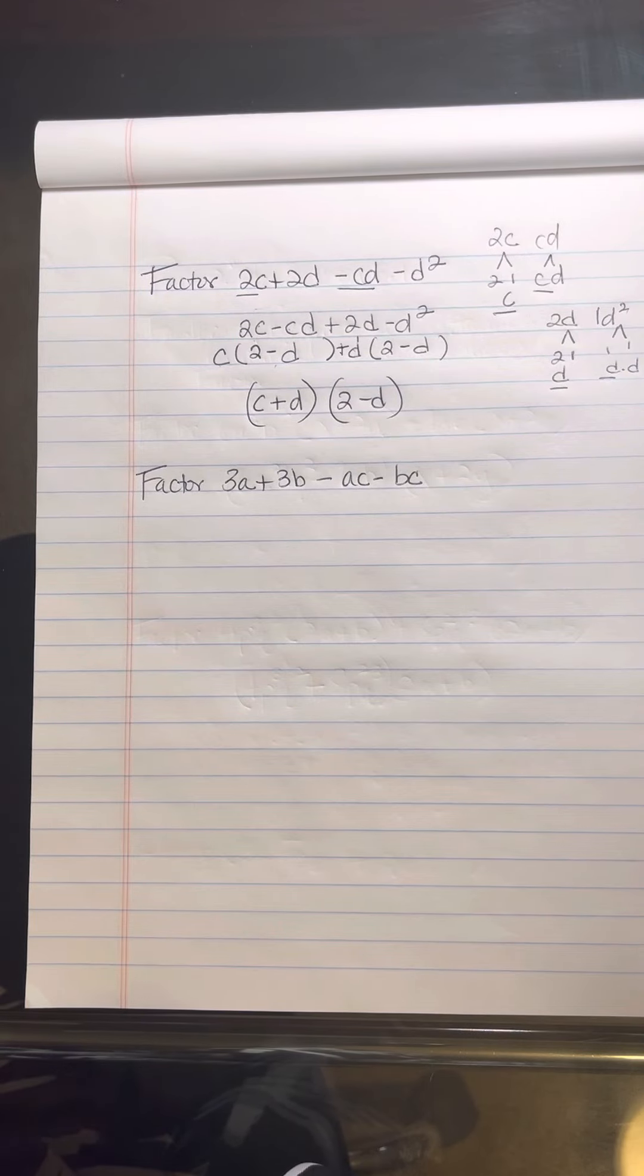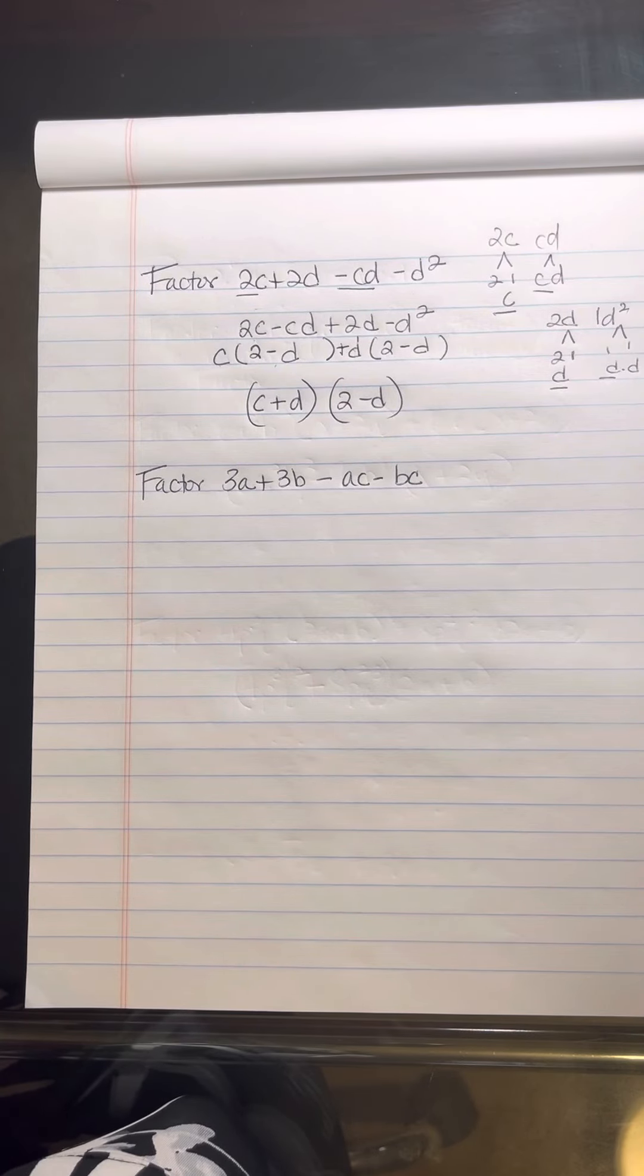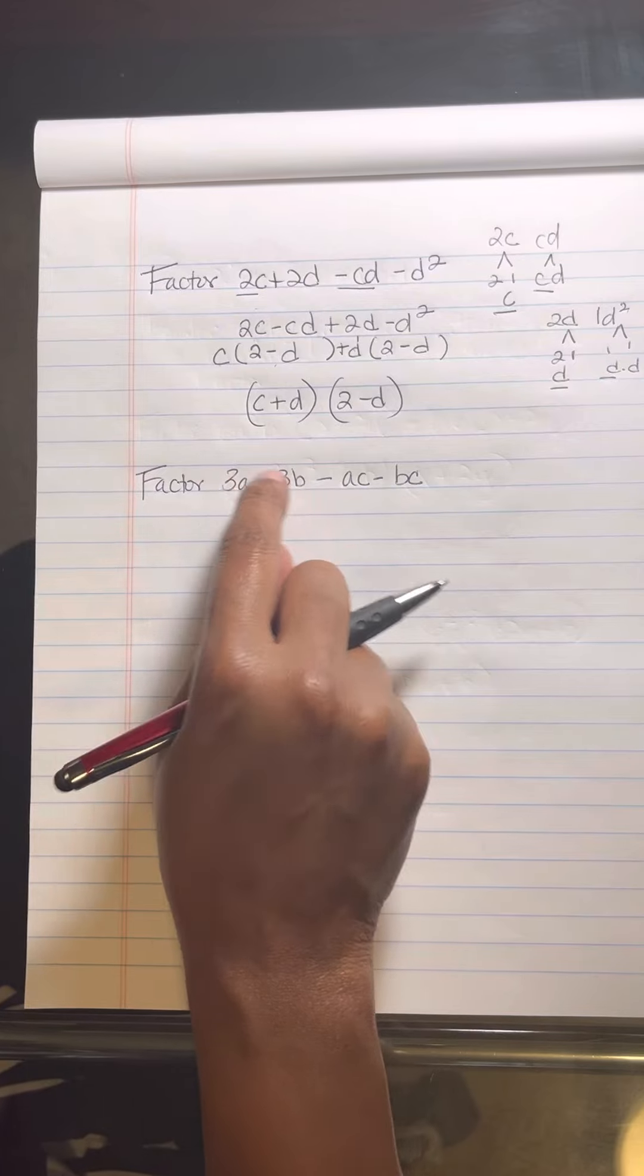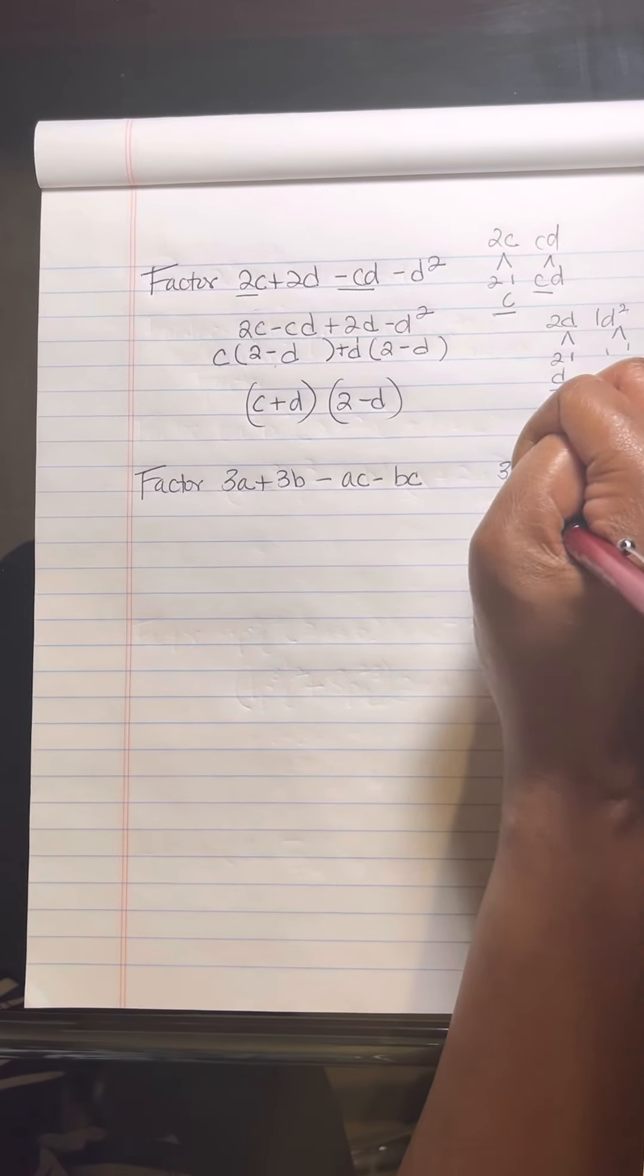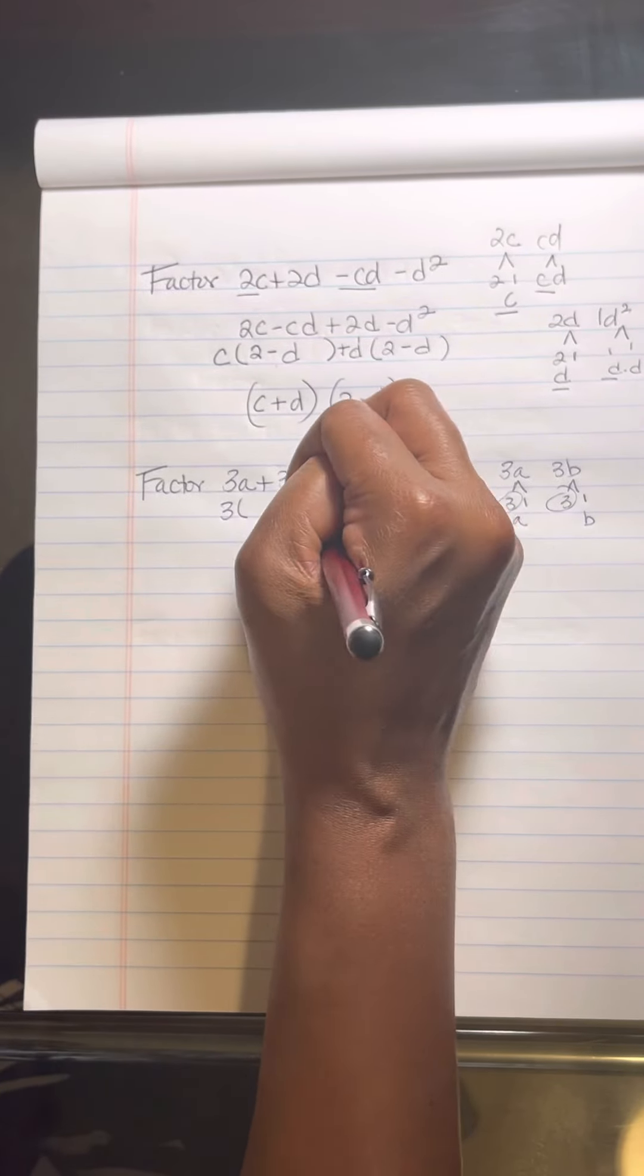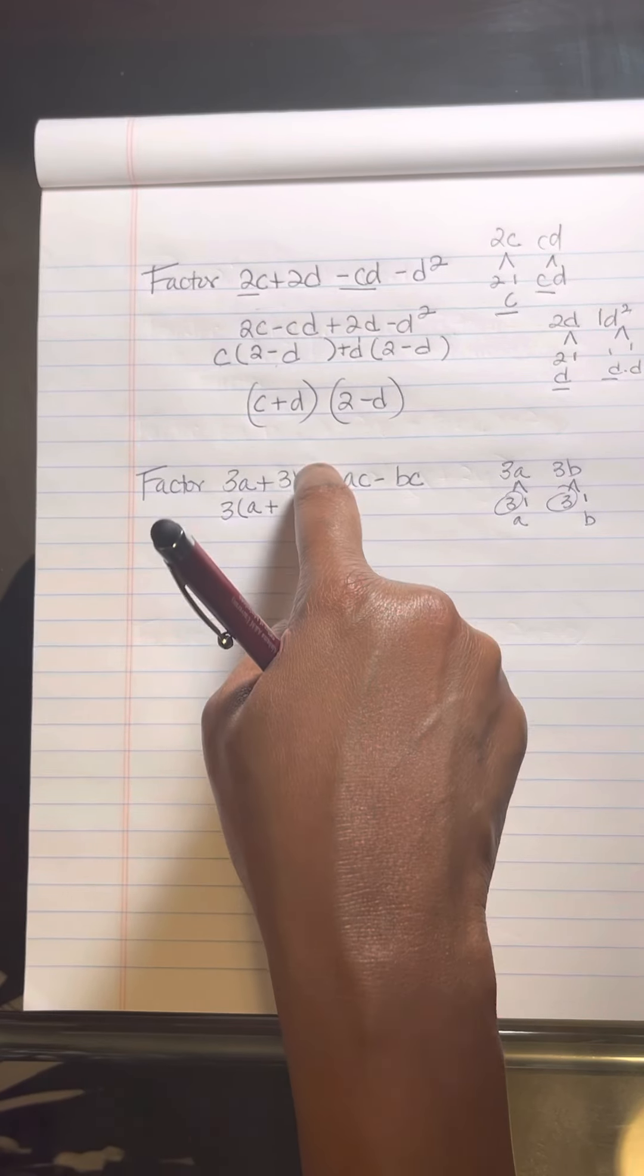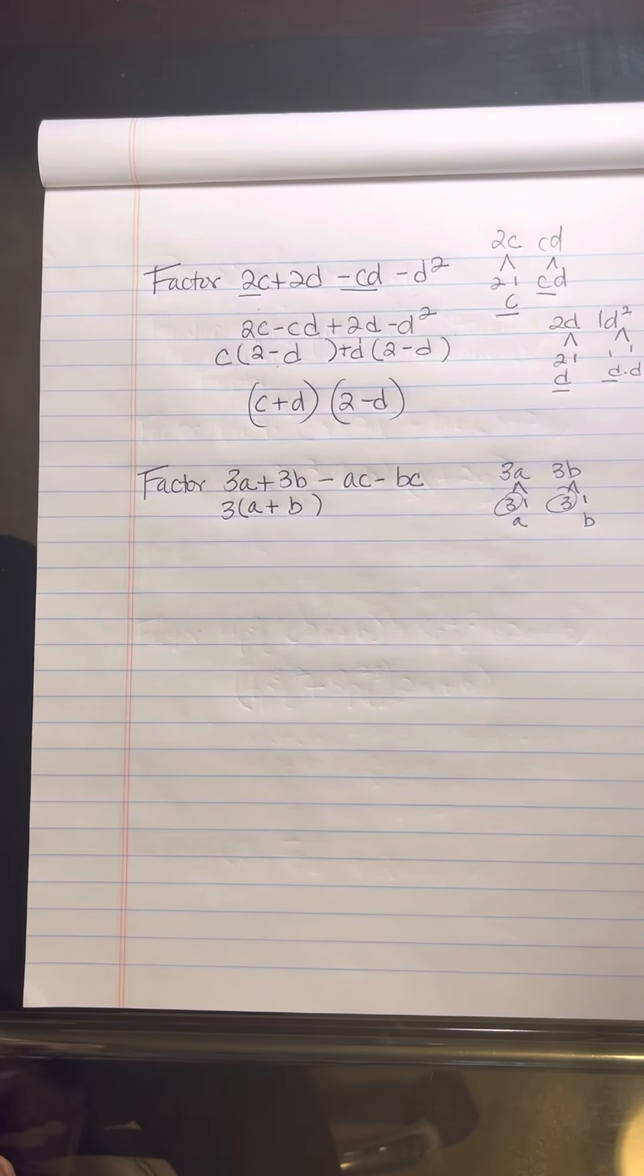It says factor 3a plus 3b minus ac minus bc. Ms. Thomas, what if I didn't know to move those around and I just try to figure it out on my own? When I just started with the first two that I saw. That's fine as well. Suppose you didn't move 3a and ac together. Suppose you kept it just like this and just went in this order. You're thinking about the greatest common factor. Your factor tree. 3 times 1 is 3. You got a. 3 times 1 is 3 here. You got b. What do they have in common? You see in common is a 3. So factor out a 3. Open up that parentheses. I need 3a. What do you have so far? 3. What are you missing? a. Bring down your plus sign. You need 3b. What do you have on the outside? I have a 3. What are you missing? b. Not hard at all. You guys, I know you can do it.